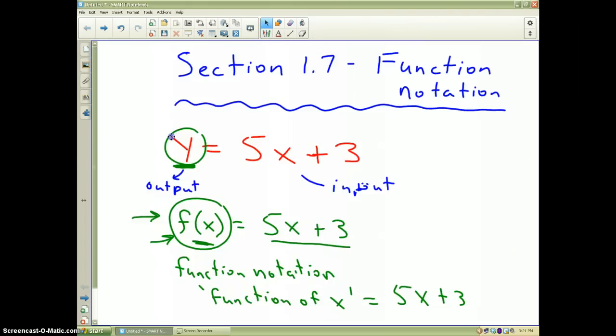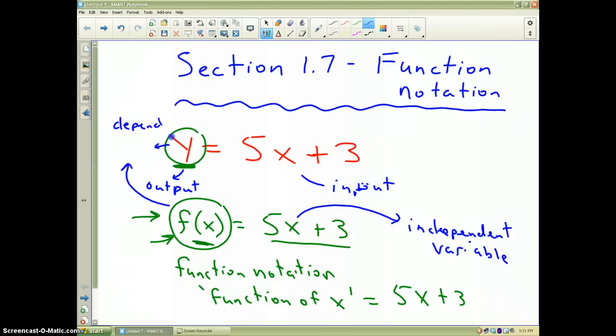Now, some other words that are also really important. The x is always called the independent variable. y or f of x is many times called the dependent variable. Because its value, y or f of x, its value depends on whatever numbers that you stick in for x. So therefore, y depends on x, or f of x depends on x. That's another type of notation or words that x and y stand for.